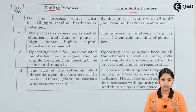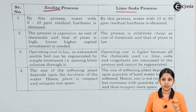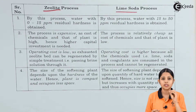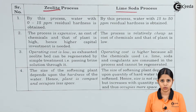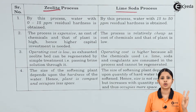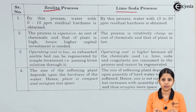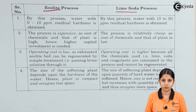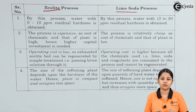To convert hard water to soft water, I have to remove CaCl₂, MgCl₂, CaSO₄, and MgSO₄. To do that, we add certain reactants which react with these impurities and form precipitates that can be filtered out. Both the zeolite process and the lime soda process work on this principle — reacting with the impurities to form insoluble precipitates which can be easily filtered out.